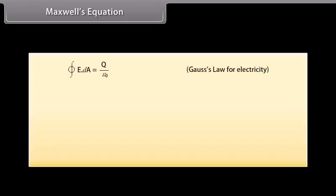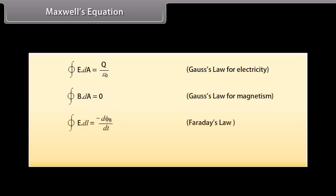Maxwell's equation. The following four equations called the Maxwell's equations are the fundamental equations in electromagnetism. Gauss law for electricity: closed integral of E dot DL is equal to Q by epsilon not. Gauss law for magnetism: closed integral of B dot DA is equal to 0. Faraday law: closed integral of E dot DL is equal to minus D upon DT of phi B. Ampere Maxwell law: closed integral of B dot DL is equal to mu not I_C plus mu not epsilon not D upon DT of phi E.